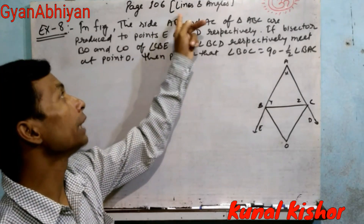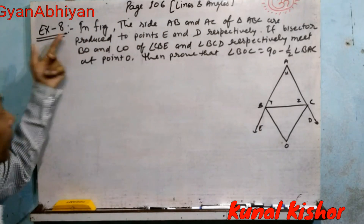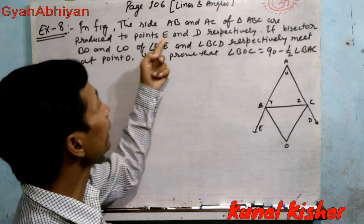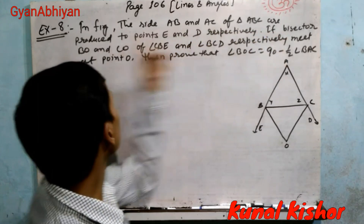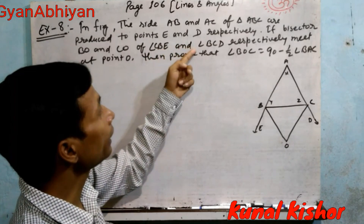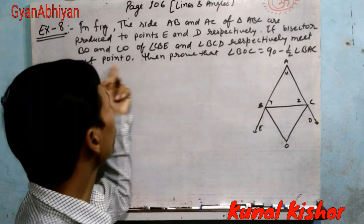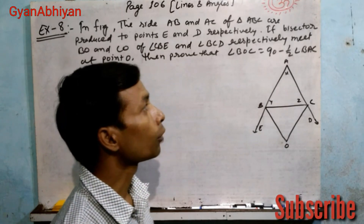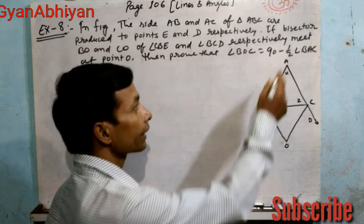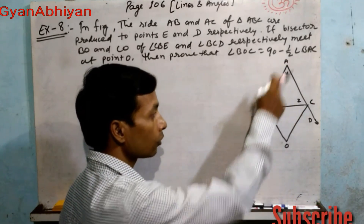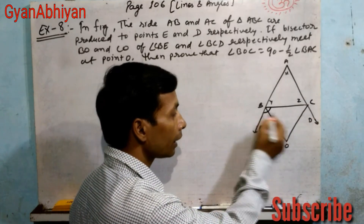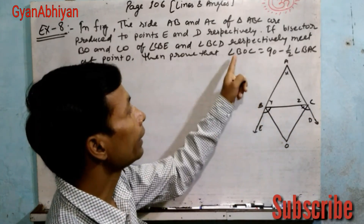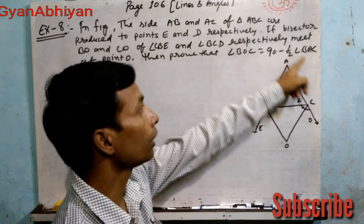NCERT page number 106, Chapter: Lines and Angles, Example 8. In the figure, sides AB and AC of triangle ABC are produced to points E and D respectively. If bisectors BO and CO of angle CBE and angle BCD respectively meet at O, then prove that angle BOC equals 90 minus 1/2 angle BAC.